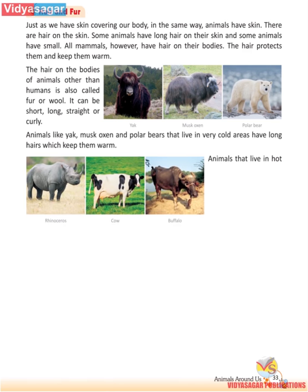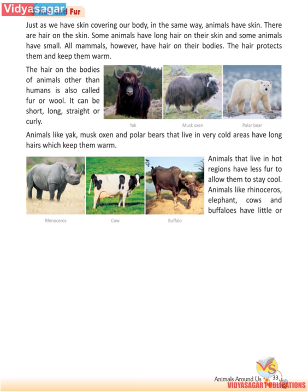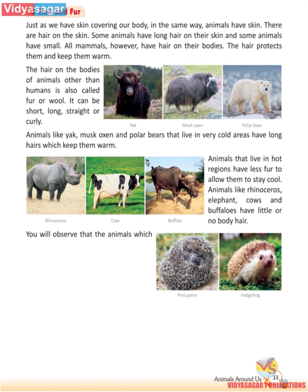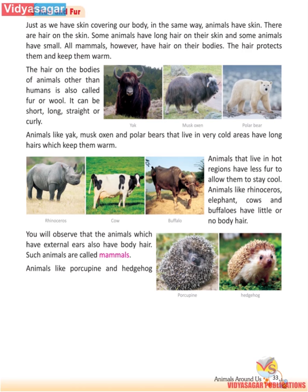Animals that live in hot regions have less fur to allow them to stay cool. Animals like rhinoceros, elephants, cows and buffaloes have little or no body hair. You will observe that the animals which have external ears also have body hair. Such animals are called mammals.